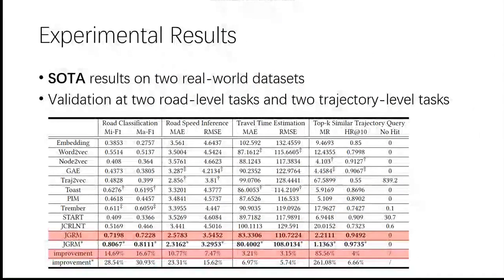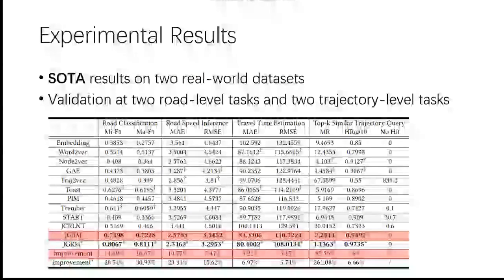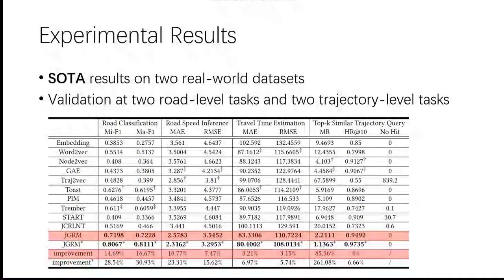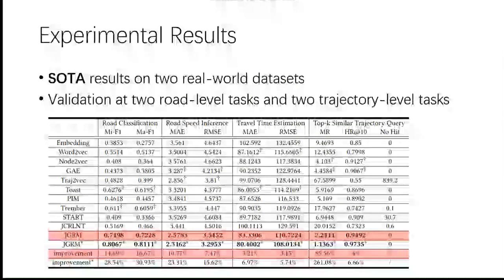We validate the effectiveness of the proposed method on two real-world datasets through extensive experiments. The experimental results show that JGRM significantly outperforms existing methods in both road segment representation and trajectory representation tasks.